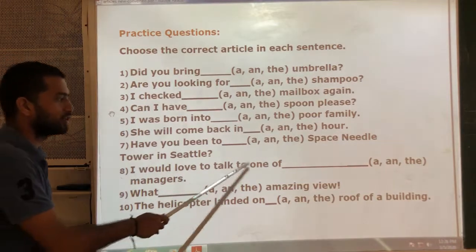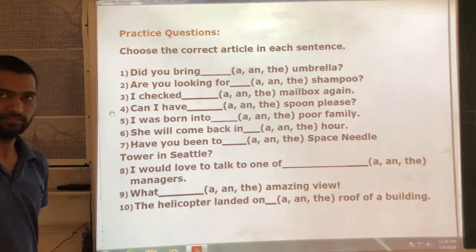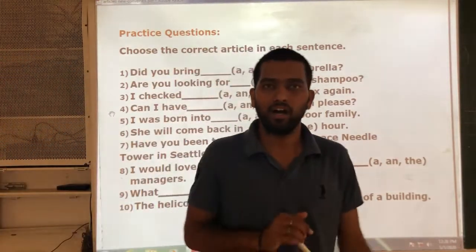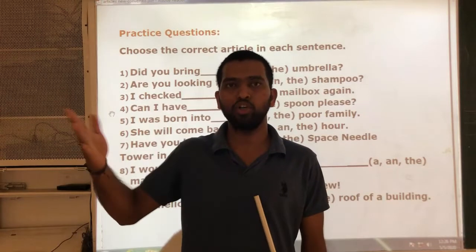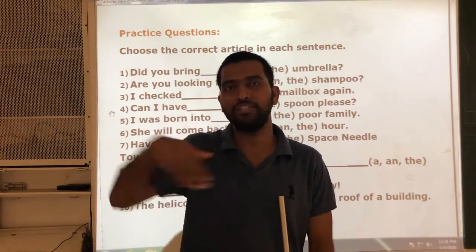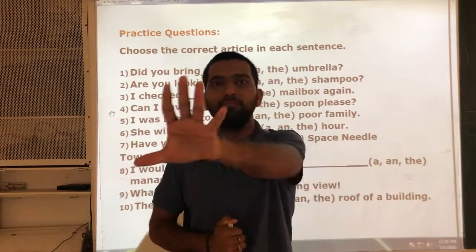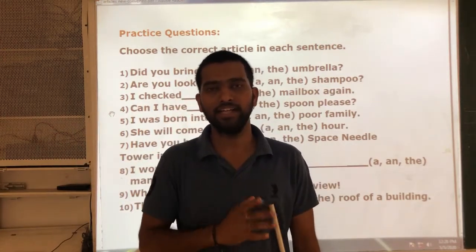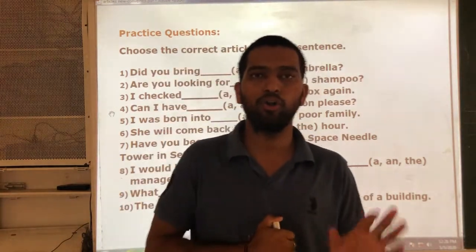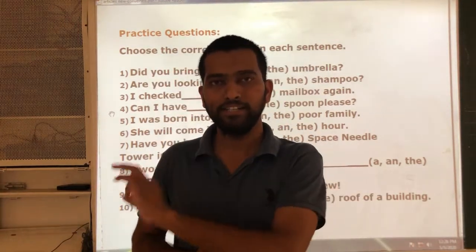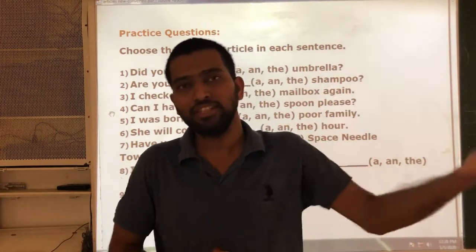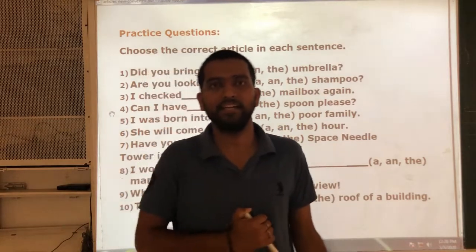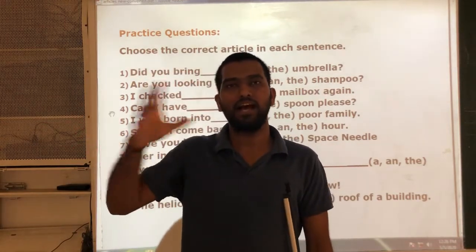Next: 'I would love to talk to ___ one of the managers.' For words like 'all', 'of', and 'both', after these words we use the definite article 'the' — for example, 'all the members of the family', 'both the participants'. Also, before words like 'whole' and 'same', we use 'the' — for example, 'the whole class' and 'the same person I have seen'.